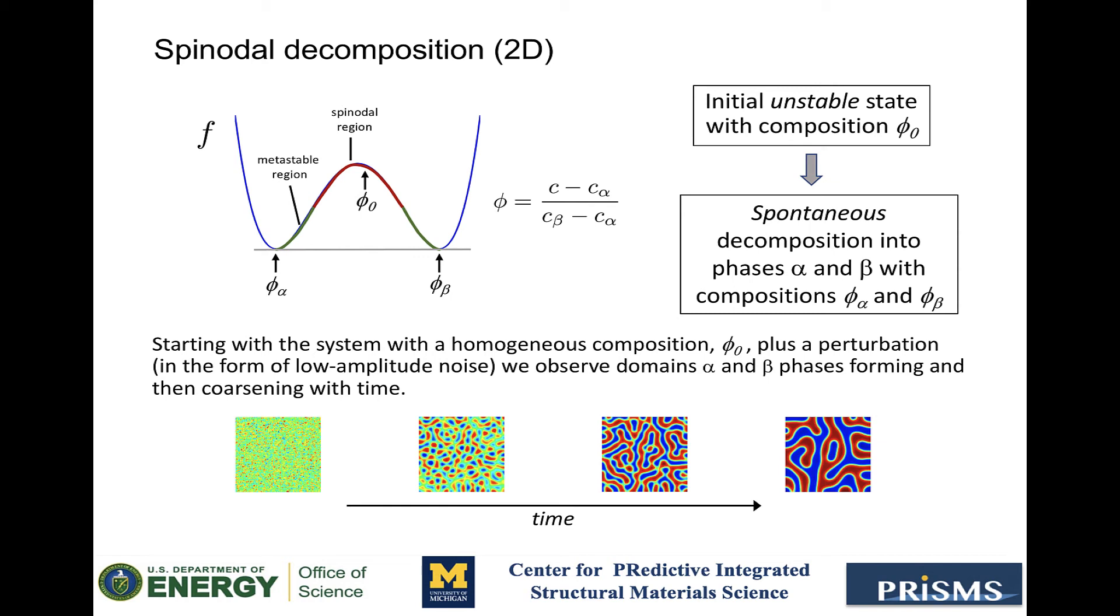But for a system to undergo spinodal decomposition, it should have a concentration within the red region, which is the unstable region. As you can see, a homogeneous phase with a rescale concentration phi-naught is in a higher energy state than stable phases with either compositions phi-alpha and phi-beta. So a homogeneous system with a concentration phi-naught can spontaneously reduce its energy by decomposing into two phases as long as the total composition of the system isn't changed.